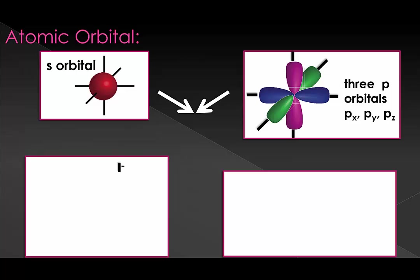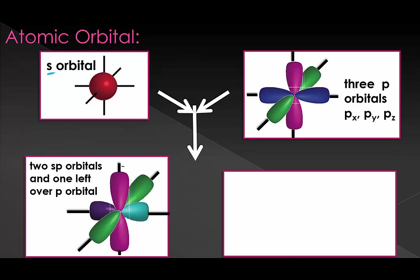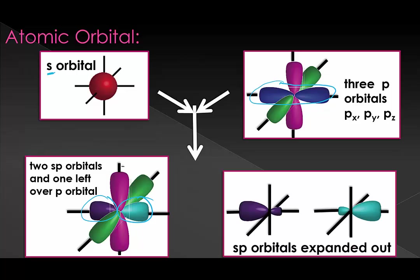Let's take a look at sp hybridization. In this case, we take our s orbital and one of our p orbitals and combine them. We took our s orbital and one of our p orbitals and combined them to make a new set of hybrid orbitals, shown here in purple and blue. Each of those is an sp orbital, so now we have two of them. I've pulled it out here so you can see what it looks like when they're not overlapping.